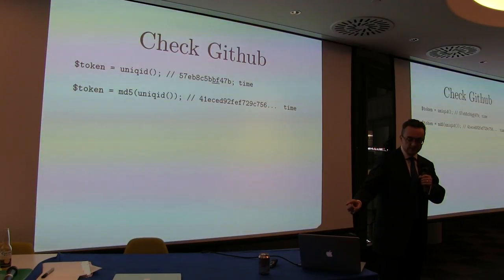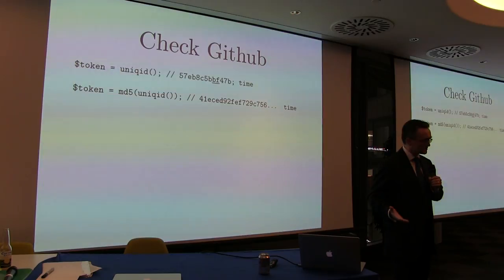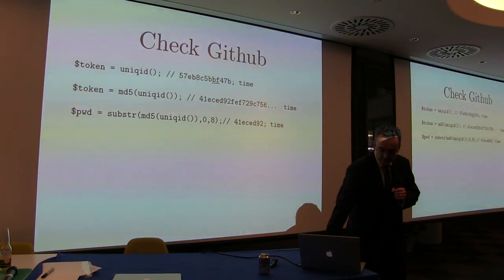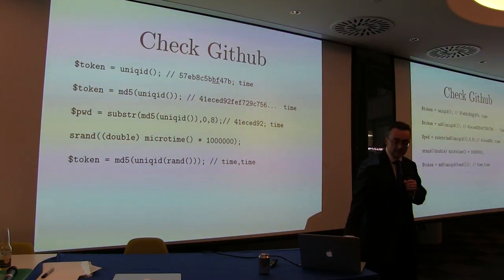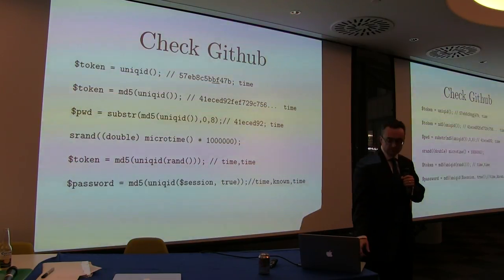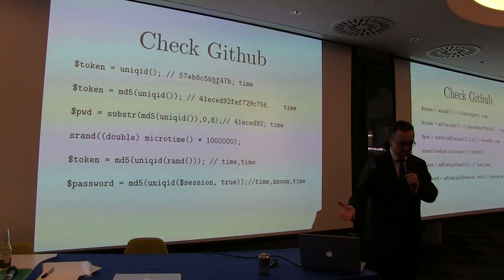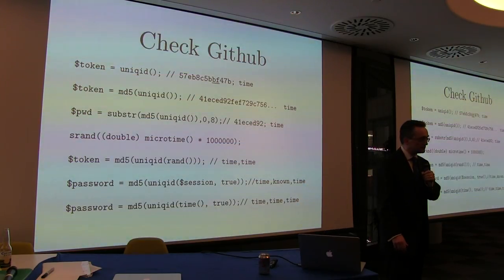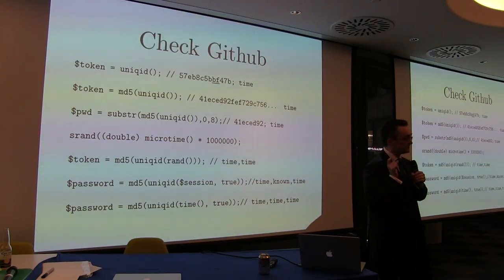The first example is generating a token using unique_id directly. The next one makes it more secure by hashing it — that adds some appearance of security, but gives the developer a false feeling of safety. There's no extra entropy there. When generating a password we often truncate it. Another example uses entropy the attacker already knows — like the attacker's own session ID as entropy in the token generation, which adds nothing. And then there's this particularly lovely example where you're essentially taking the time, prepending the time, and seeding the PRNG based on the time.